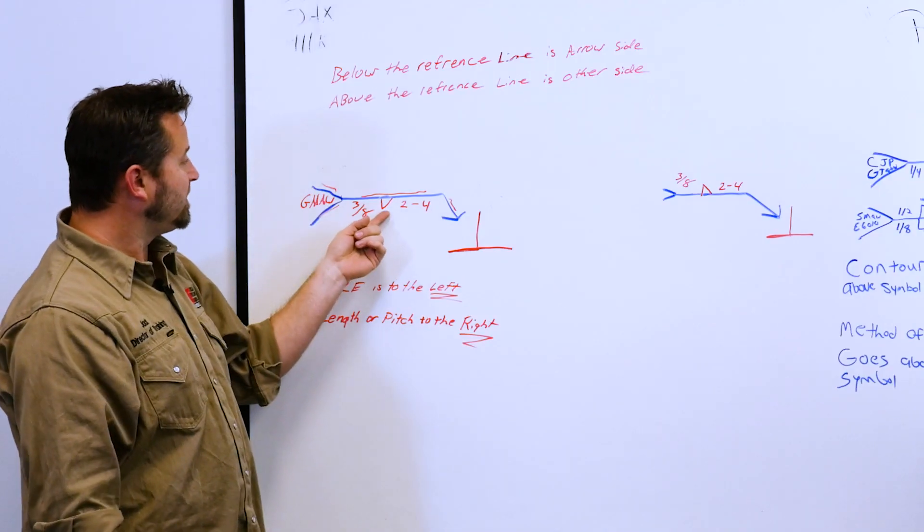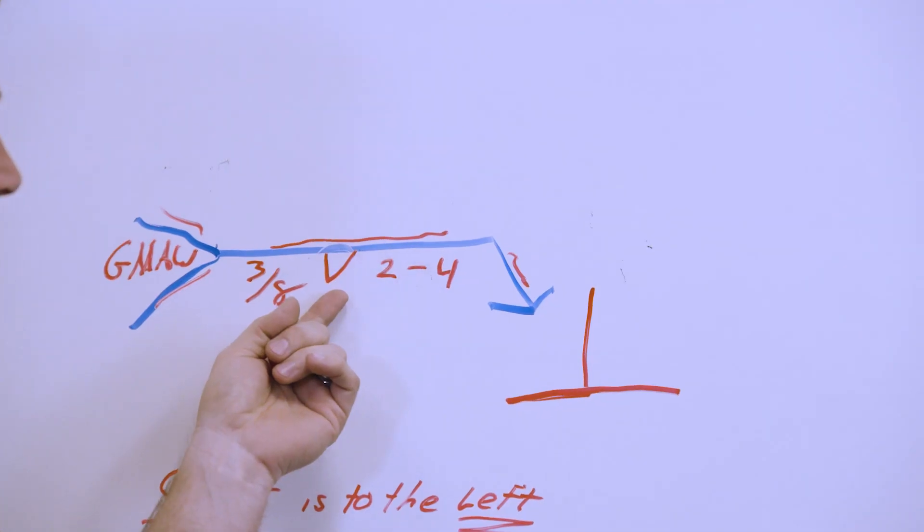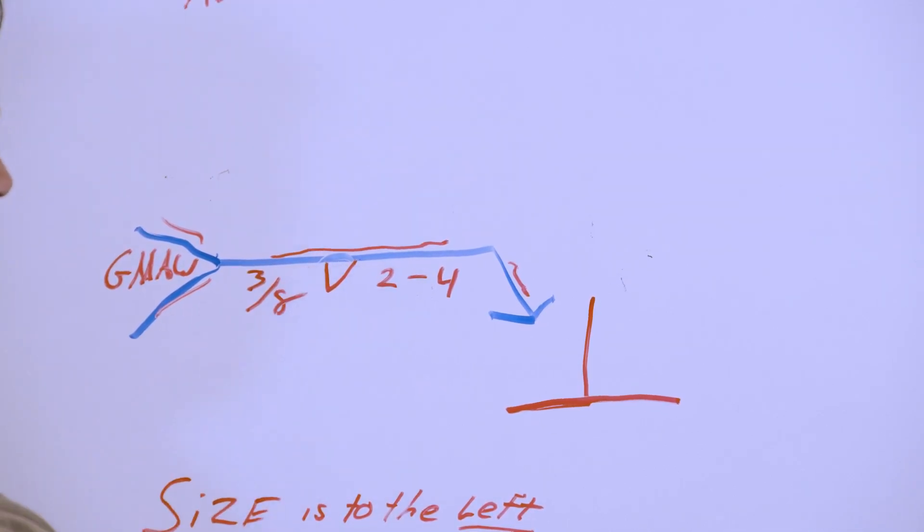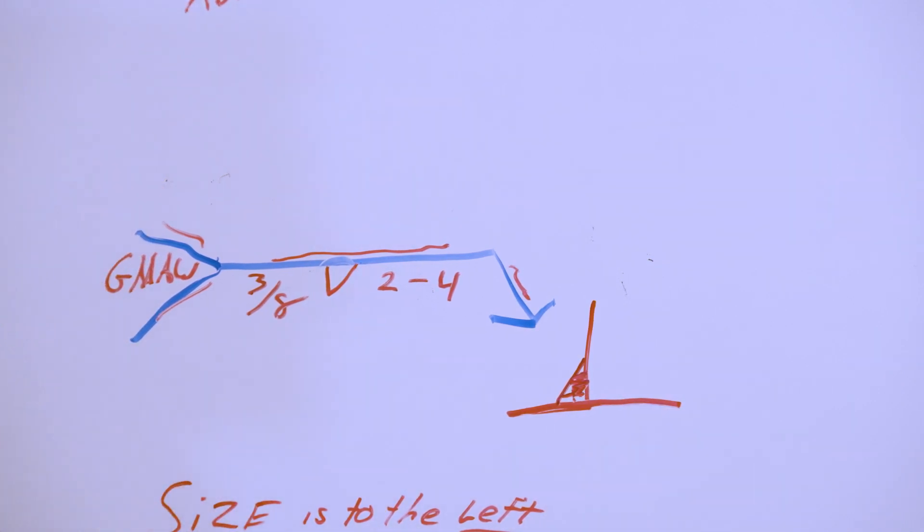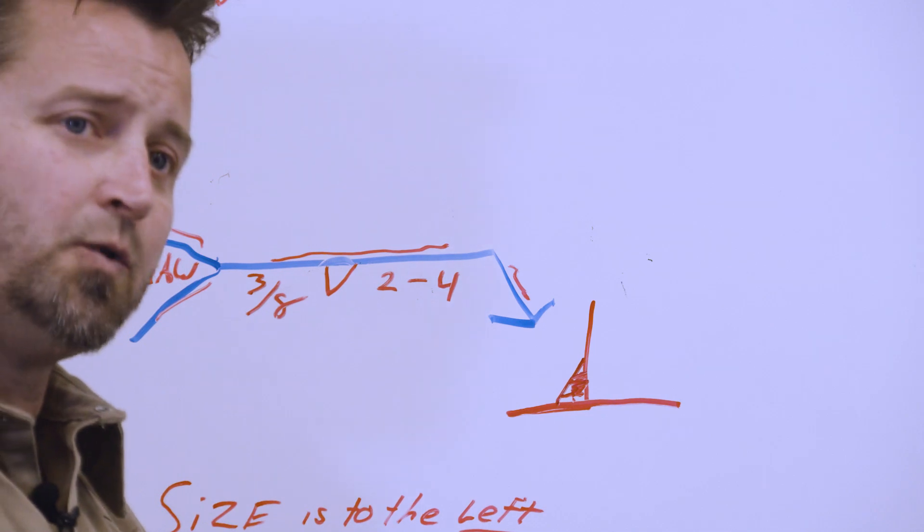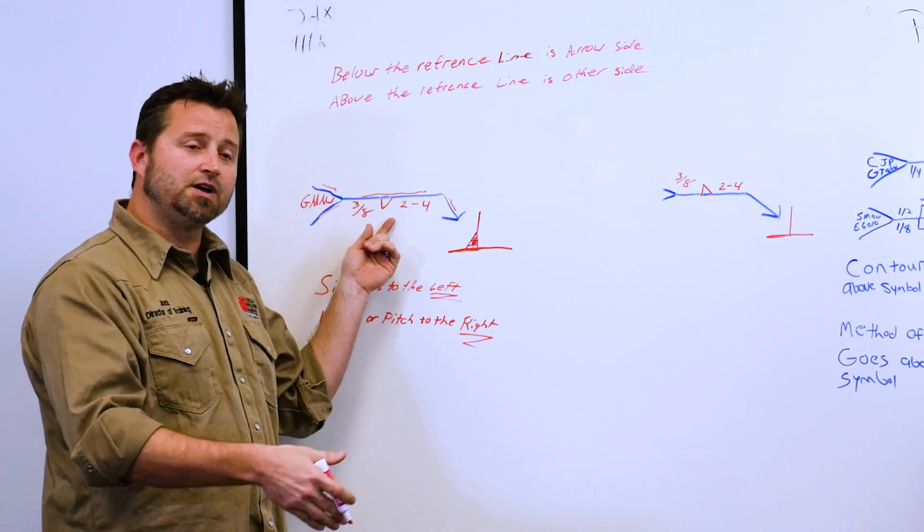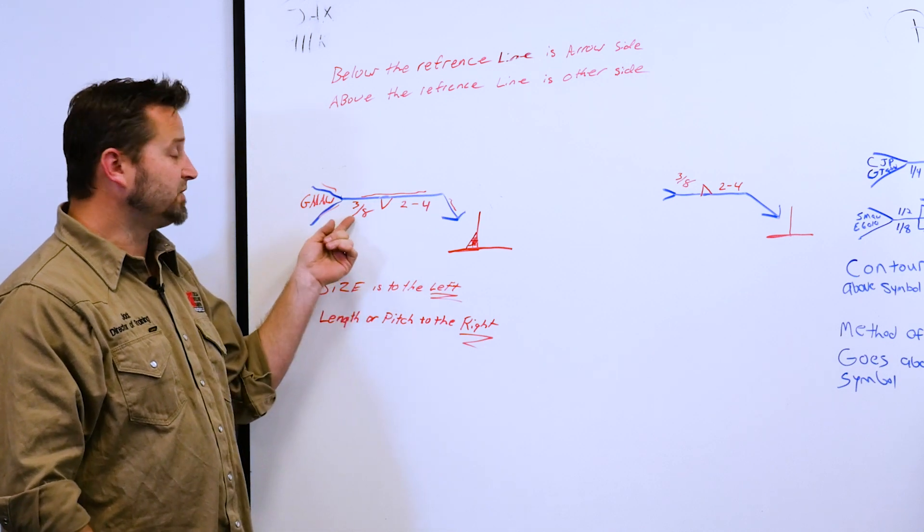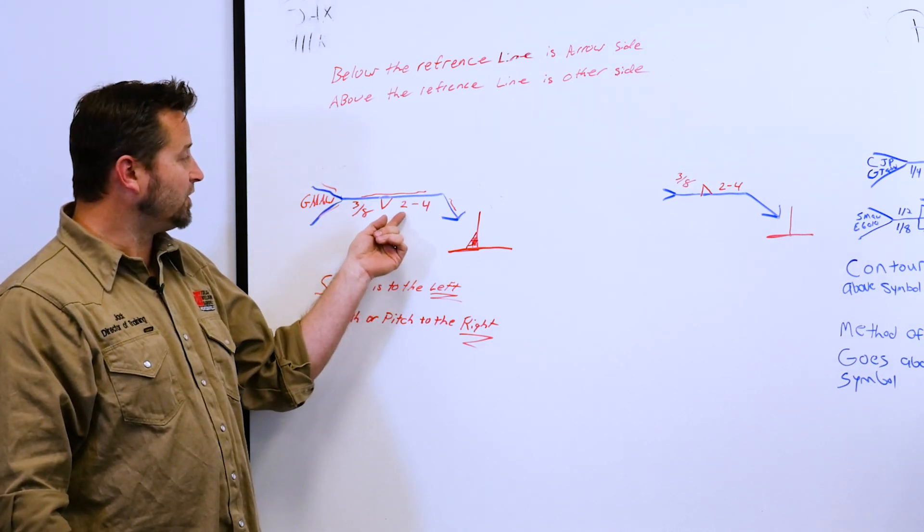So where is our symbol? It is below the reference line. So where are we going to put our fillet weld, our intermittent fillet weld? That's 3/8ths long, it's going to go right here, arrow side. So when you're out in the field and you see this symbol, it's going to let you know that's where you want to put it. Wherever that arrow is pointing, if it's below the reference line, you're going to put that weld there. This is going to be a fillet weld. It's going to be 3/8ths long, and then you're going to have it intermittent on two-on-four.